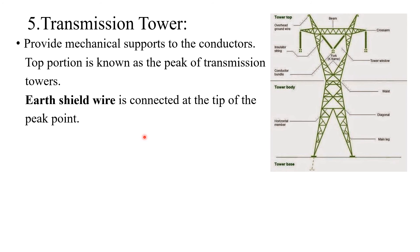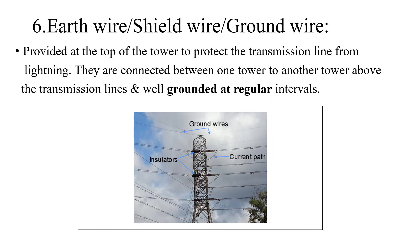The fifth important component is the transmission tower. They provide mechanical support to the conductors. The top portion of the transmission tower is called the peak. An earth shield wire, or simply earth wire, is provided at the top of the transmission tower. Earth wires are provided at the top of the transmission towers to protect the transmission line from lightning and are connected from one tower to another above the transmission lines, and well grounded at regular intervals.